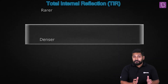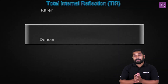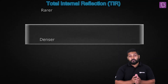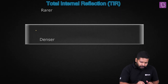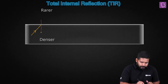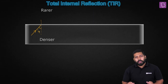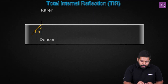You have a denser medium and the light is supposed to travel from denser to rarer medium. Let's say you have got some angle of incidence. This is the incident ray, and if I make a normal, this is your angle of incidence. The light is going to bend away from the normal — we know this.